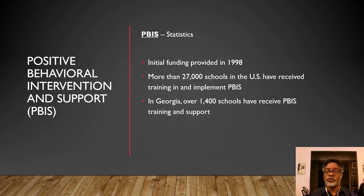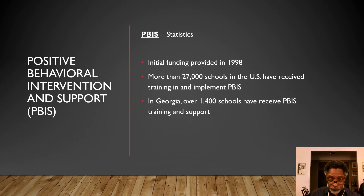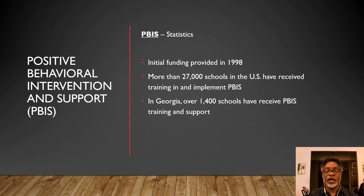Taking a broader statistical view of PBIS: initial funding was provided in 1998, meaning PBIS has been in place for over 20 years and is widely spread throughout the United States. There are more than 27,000 schools in the country that use PBIS — schools that have received funding, training, and support to implement it. In the state of Georgia, there are over 1,400 schools that receive PBIS training and supports. PBIS is a broadly used school-wide and classroom management system in the United States.